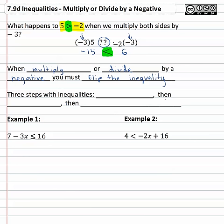So if we have to multiply or divide by a negative number as we're solving, it's going to make the inequality flip directions.